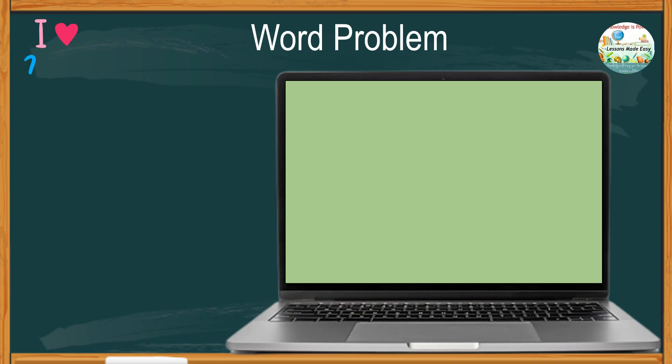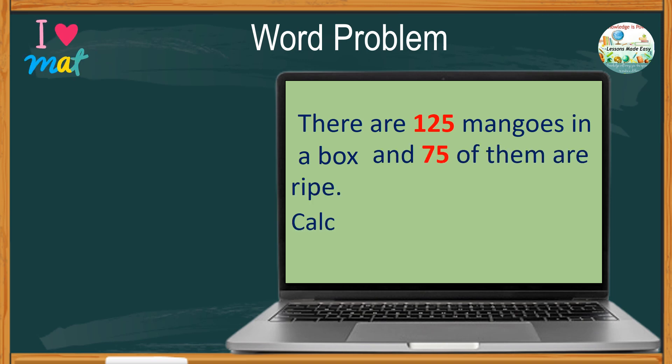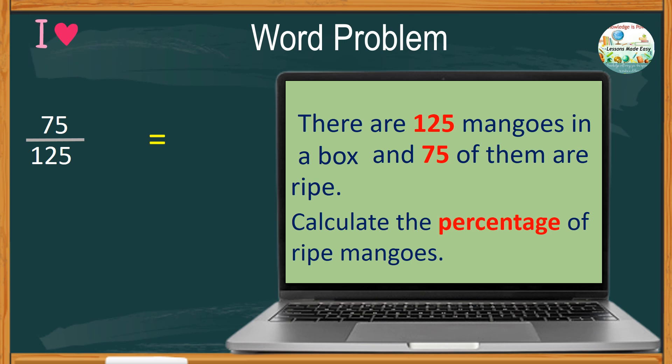Here is another problem. There are 125 mangoes in a box, and 75 of them are ripe. Calculate the percentage of ripe mangoes. Let's simplify the problem to better understand what is being asked. It says 75 ripe mangoes out of the total number of mangoes, which is 125. Then, calculate the percentage.